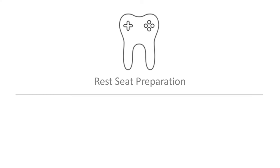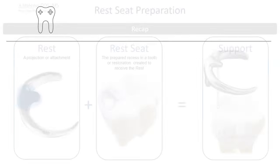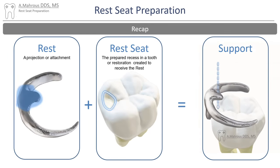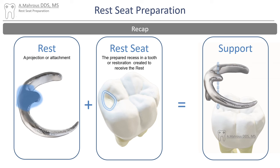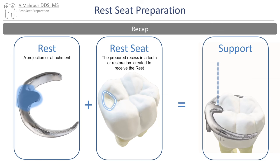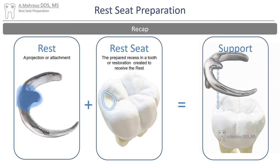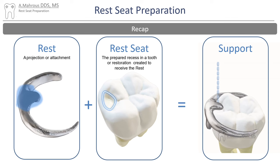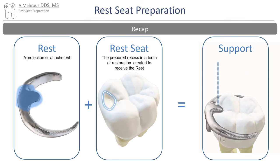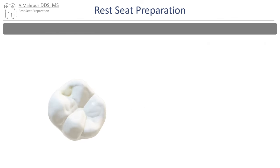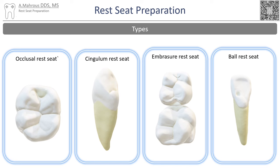Hello and welcome to another RPD video. Today we'll be discussing rest seat preparation. First, it's important to make some distinctions: the rest is part of the framework that goes into the rest seat. The rest seat is a recess created by the dentist, prepared on the tooth surface. Together they provide support for the partial denture. There are many different types of rest seats; in this video we'll describe the most common ones.